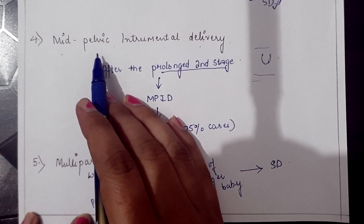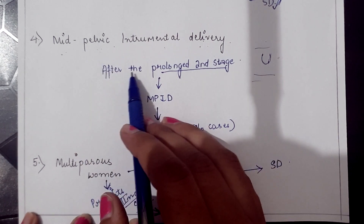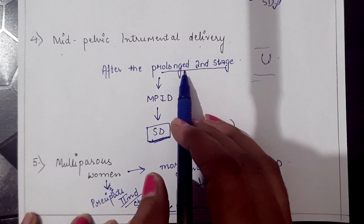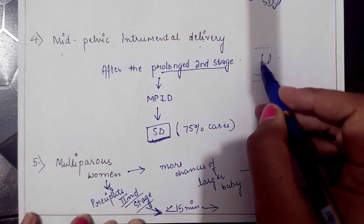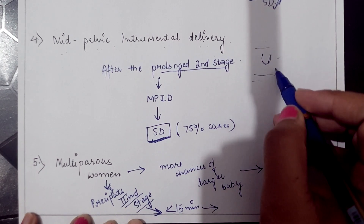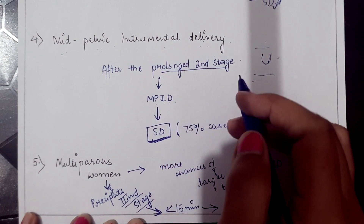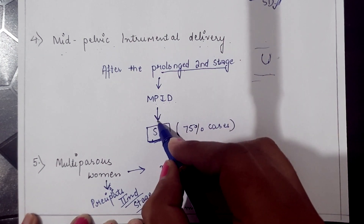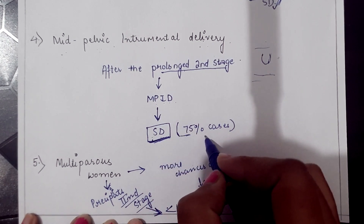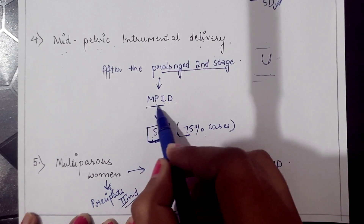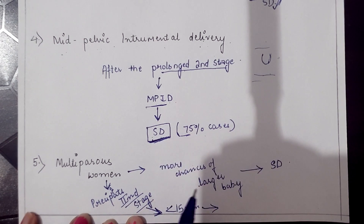Mid-pelvic instrumental delivery, also called mid-pelvic forceps or vacuum delivery, occurs after a prolonged second stage when there is full dilatation of the cervix but the fetal head is present midway through the maternal pelvis. In this case, mid-pelvic instrumental delivery may be performed, and approximately 75 percent of such cases might develop shoulder dystocia.